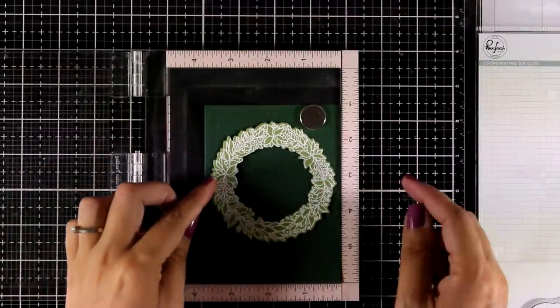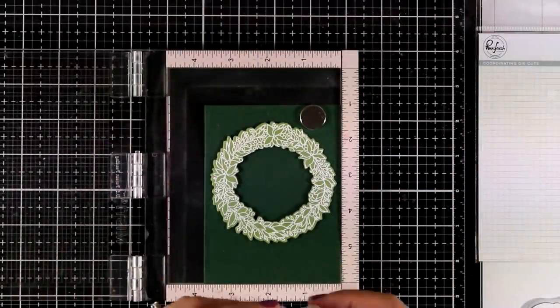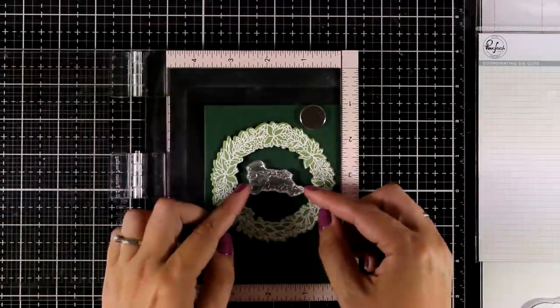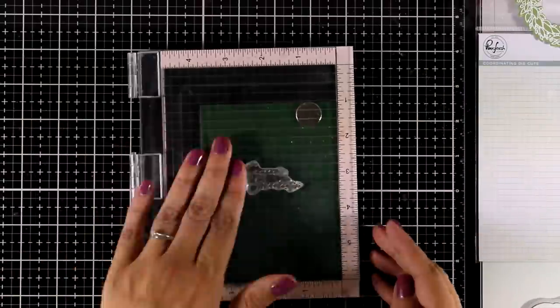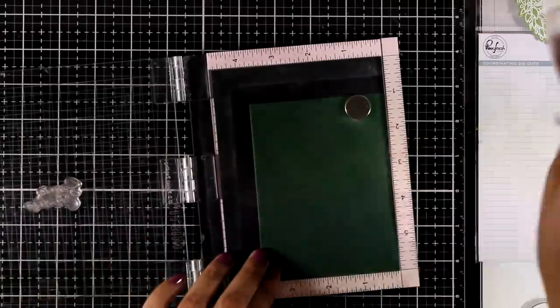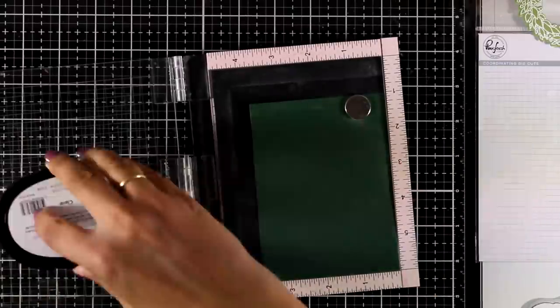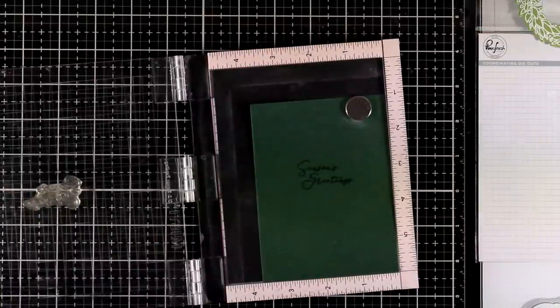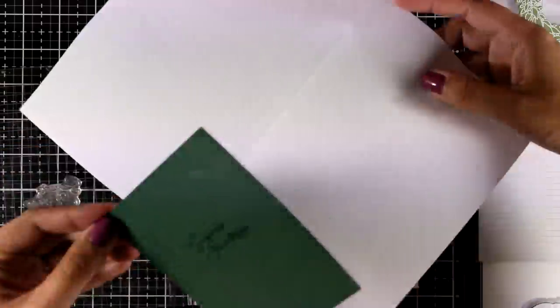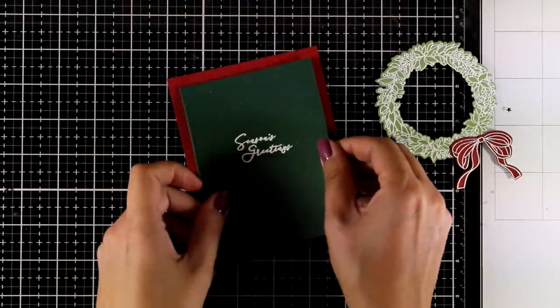Now I have a dark green panel and I am placing the wreath on top so that I can measure about whereabout I need to stamp my sentiment. The sentiment comes from the same stamp set as the wreath and it reads seasons greetings. I'm going to stamp that with embossing ink and emboss it with white embossing powder again and I also did the same thing for the bow.